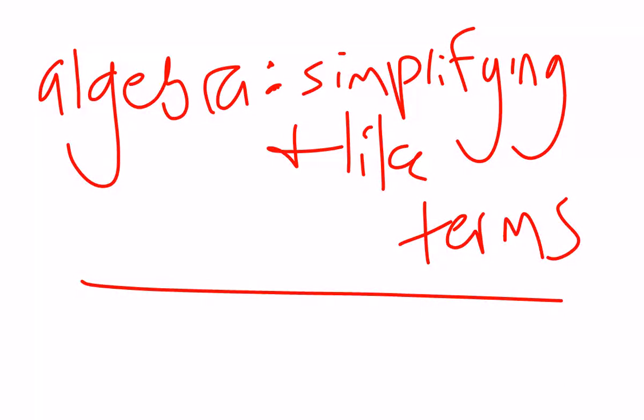The first thing we'll be asked to do in algebra is to simplify expressions. Simplifying an expression is taking expressions such as 3x plus 2x and working out that we can write that in a more simple way, 5x. To simplify, the first way we would do this is collecting like terms.